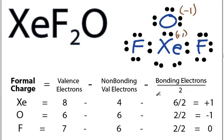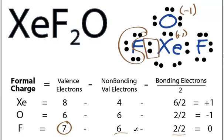For the Fluorine, seven valence electrons. We have six that are non-bonding and two involved in bonds. Seven minus six minus one is zero, and that's gonna be the same for both Fluorines.